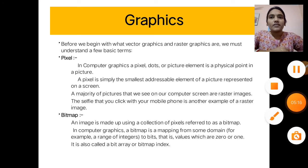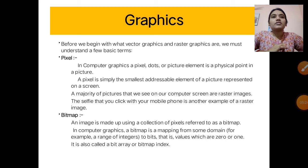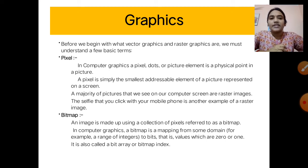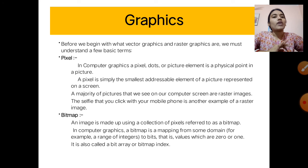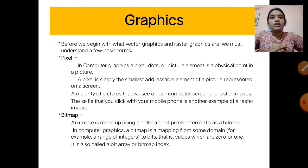In computer graphics, a bitmap is a mapping from some domain — for example, a range of integers — to bits, that is values of 0 or 1. It is also called a bit array or bitmap index. When a bitmap image is stored in the computer, it is stored in binary form as 0s and 1s. These are the basic terms: pixel and bitmap.